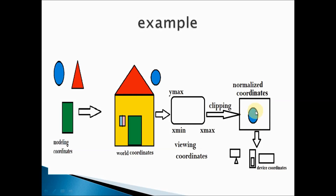Finally, graphics can be displayed on different devices — a computer, a mobile phone, or a tablet. The graphics must display properly on each device, so they are rendered with respect to that device's own coordinate system: computer coordinates for a computer display, mobile coordinates for a mobile display, and so on.